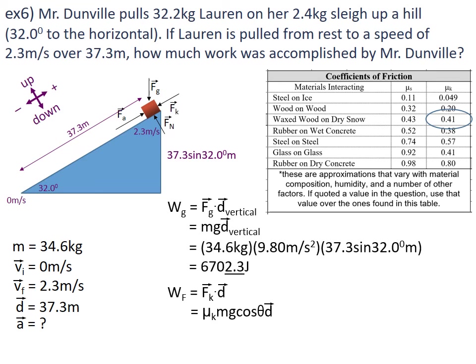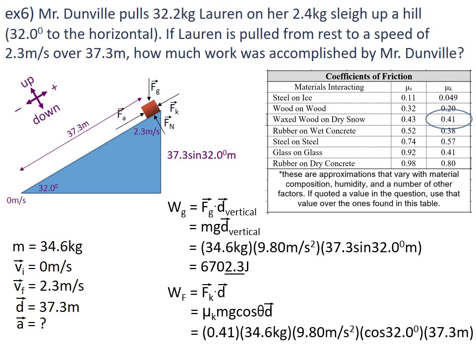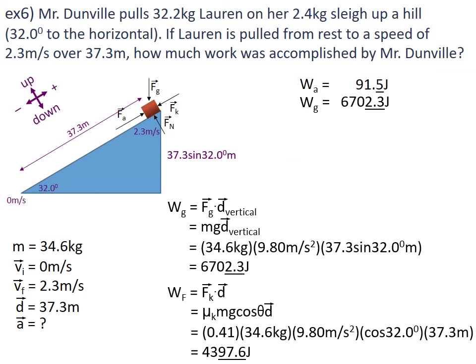The box was ground along that slope a total of 37.3 metres, so we can sub those numbers in: μ_k = 0.41, mass = 34.6 kilograms, gravity = 9.80 metres per second squared, cos(32.0°) because it is not on a flat surface, and the displacement is 37.3 metres. Punch that into our calculator and we get a total of 4,397.6 joules going into friction.